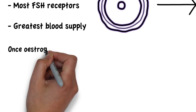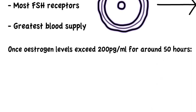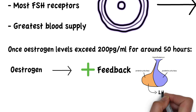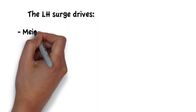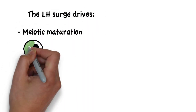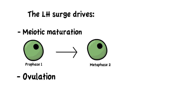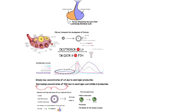Once the dominant follicle causes the circulating estrogen levels to exceed 200 picograms per milliliter for around 50 hours, estrogen starts to produce a positive feedback on the pituitary gonadotrophs, stimulating luteinizing hormone secretion and leading to the mid-cycle LH surge. The LH surge drives meiotic maturation, as the follicle was originally stuck in prophase 1. It now completes meiosis 1 and rests at metaphase 2 until it enters contact with a sperm cell. It also drives ovulation and the differentiation of theca-granulosa cells into the corpus luteum, which marks the luteal phase of the menstrual cycle.